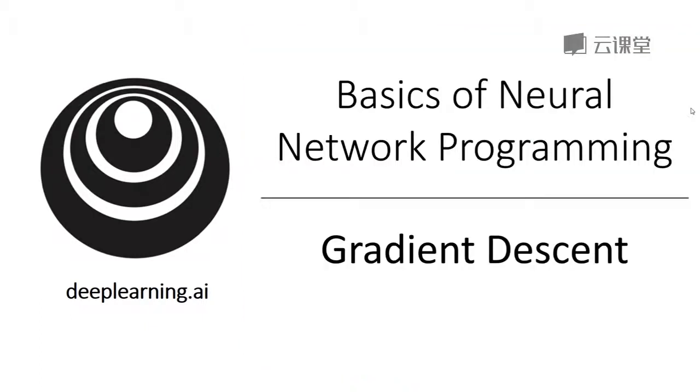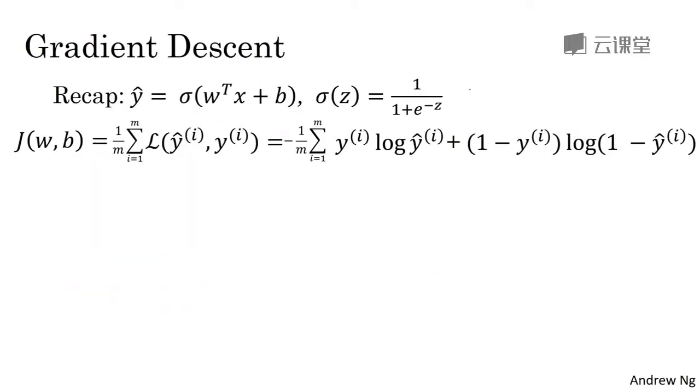Now, let's talk about how you can use the gradient descent algorithm to train or to learn the parameters w on your training set. To recap, here is the familiar logistic regression algorithm. And we have on the second line, the cost function j, which is a function of your parameters w and b.